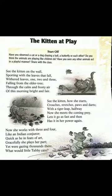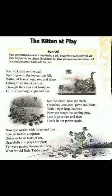Let's begin. See the kitten on the wall, sporting with the leaves that fall — withered leaves, one, two, and three, falling from the elder tree. Through the calm and frosty air of this morning bright and fair. See the kitten how she starts, crouches, stretches, paws and darts — with a tiger leaf halfway. Now she meets the coming prey, lets it go as fast, and then has it in her power again. Now she works with three and four, like an Indian conjurer, quick as he in feats of art; gracefully she plays her part. Yet were gazing thousands there, what would little Tabby care?